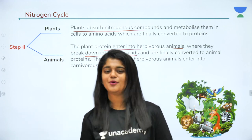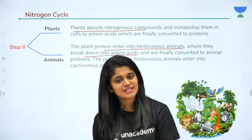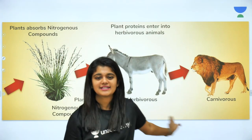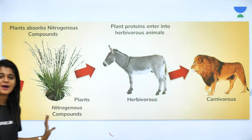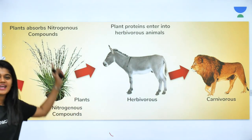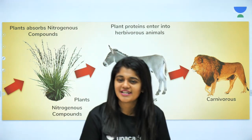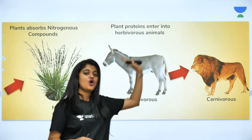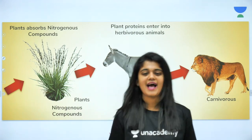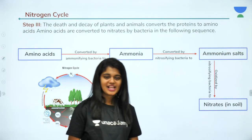The proteins from herbivorous animals then enter carnivorous animals when they prey on them. So diagrammatically, plants first absorb nitrogenous compounds; herbivorous animals convert plant proteins to animal proteins; and carnivorous animals consume herbivorous animals, so the proteins finally enter carnivorous animals as well. This is Step 2 of the nitrogen cycle.